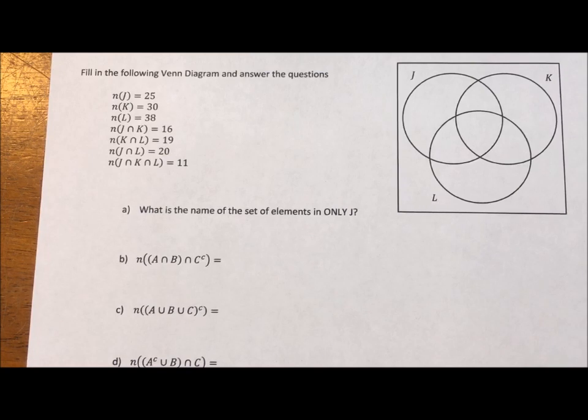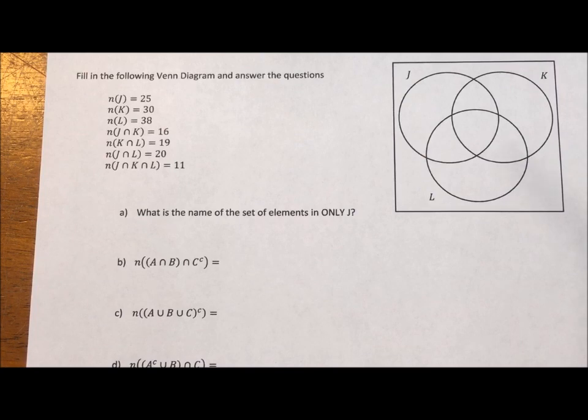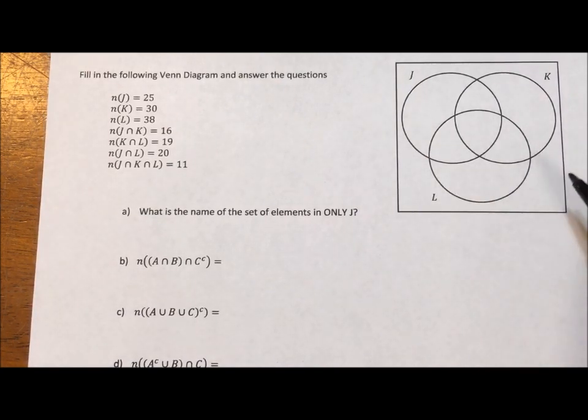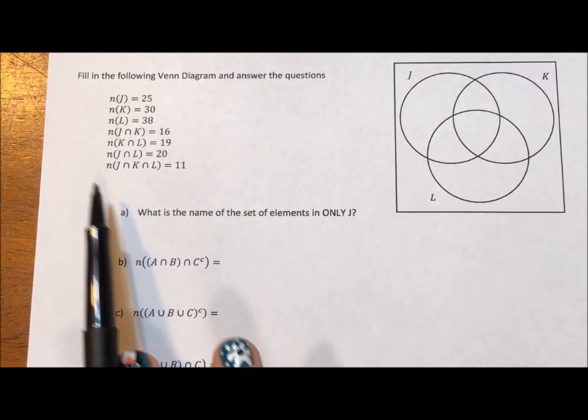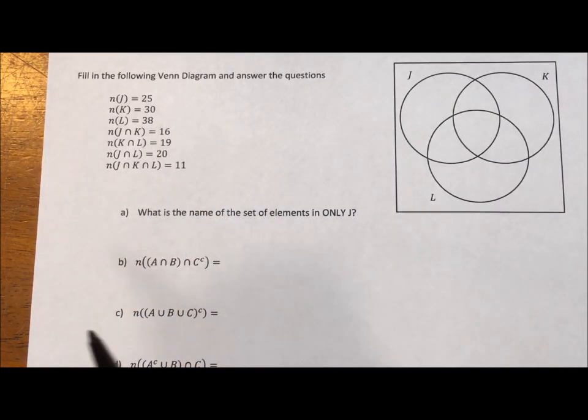So in this video what we have is a Venn diagram, and what we're trying to do is figure out the number of elements in each of the circles. Now it's always written top-bottom, you always want to read it bottom-top. My next video will be doing this again with words.